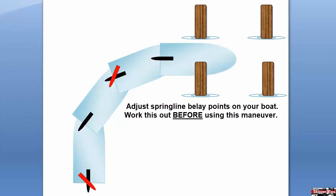As soon as possible, drop the eye of each spring line over the outermost pilings. This will stop the forward momentum of your boat and prevent the bow from making contact with the seawall ahead.